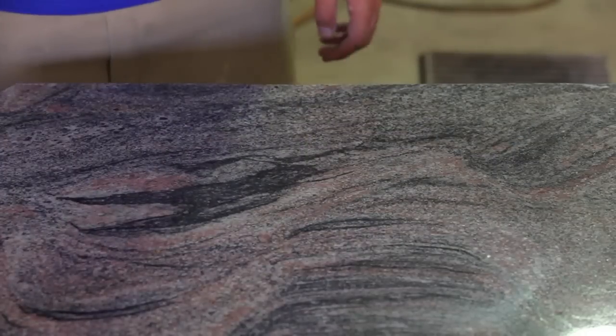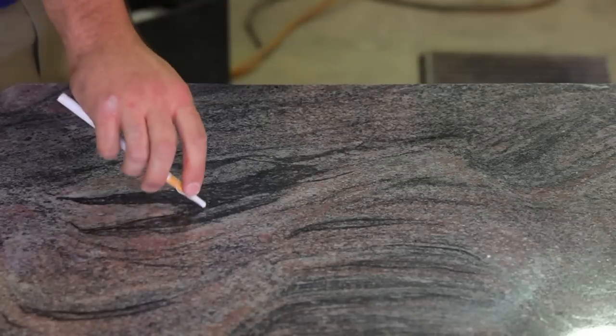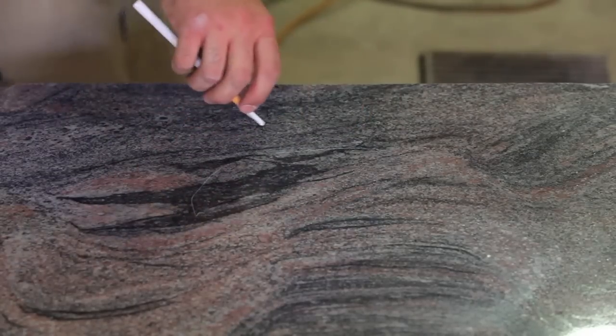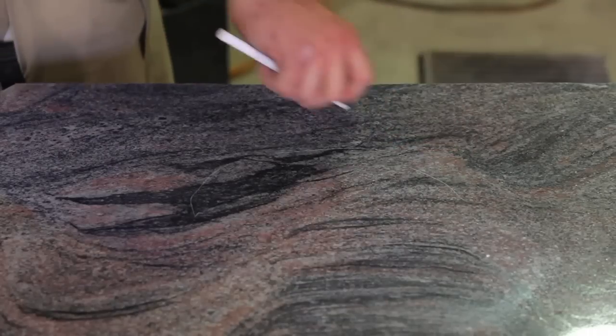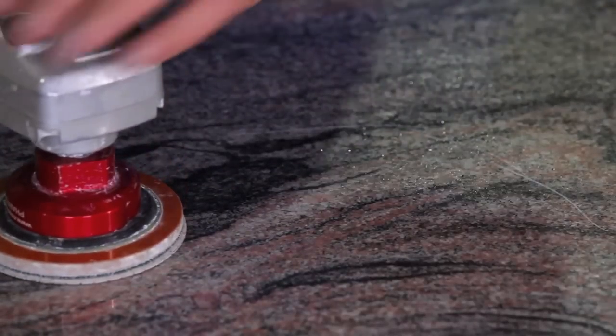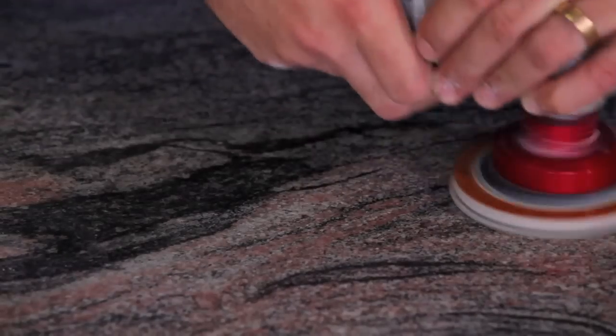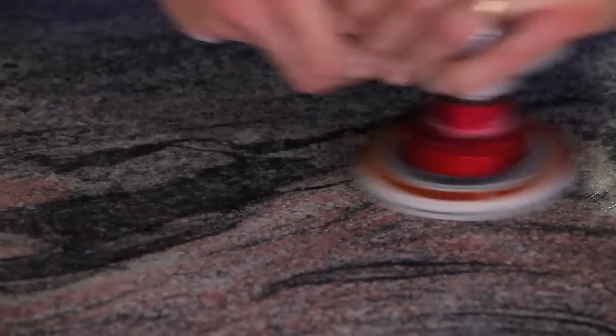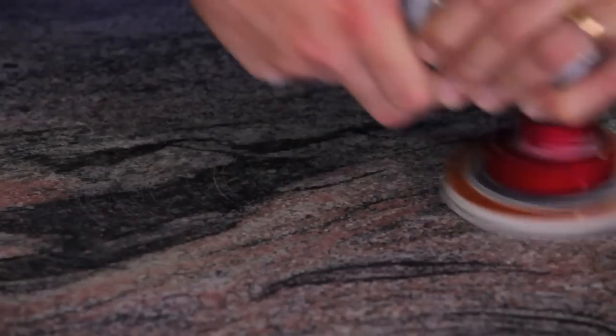On some stones such as this one the 1000 grit resin will produce an almost factory finish. It will be difficult to see the area that you are working on as it will blend in very nicely with the rest of the stone. At this point we are almost finished. Do any touch ups as needed to make sure that there is no distinguishing outline from the area that you are working on.